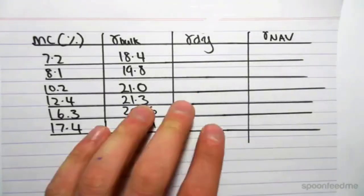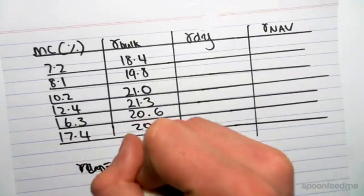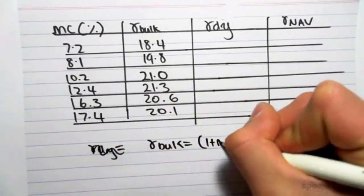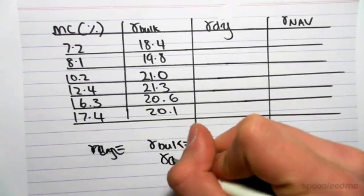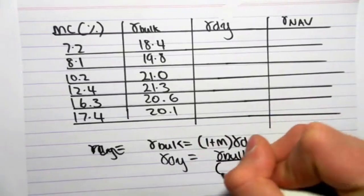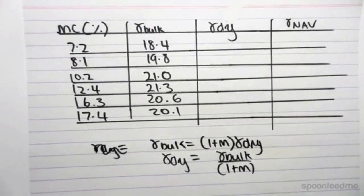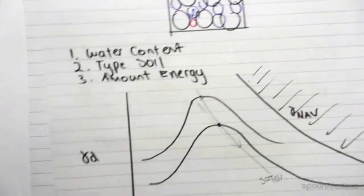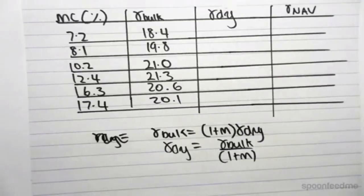We know that gamma bulk equals one plus m outside of the dry unit weight, which means that we can find the dry unit weight is equal to gamma bulk on top of one plus m. And the reason we're doing this is because our graph we just did, to draw this graph, we need to find the dry unit weight against the moisture content.